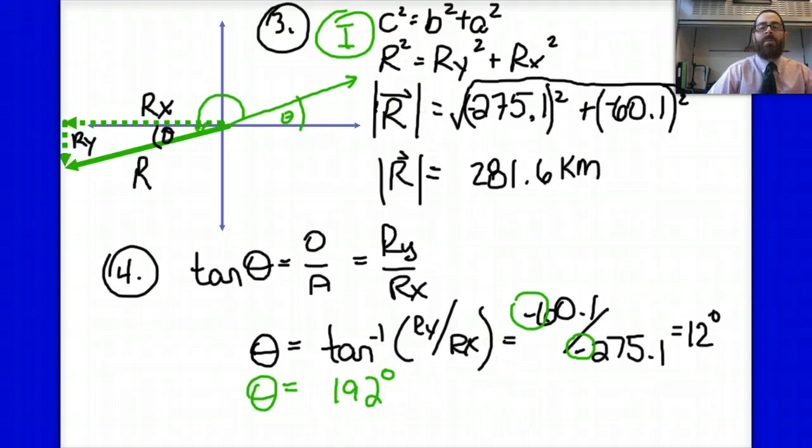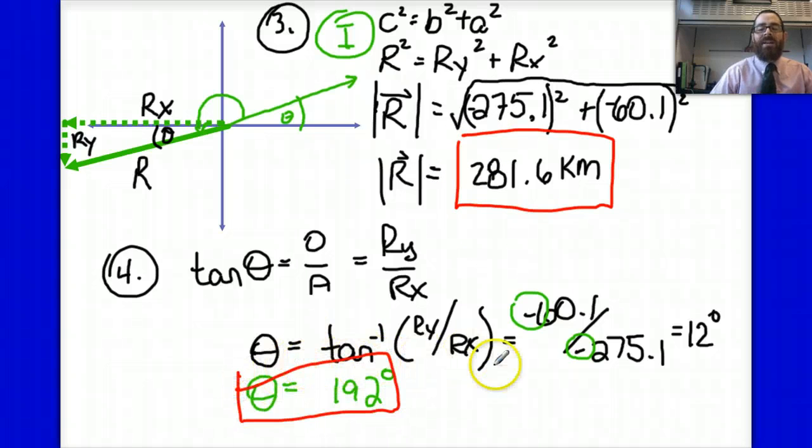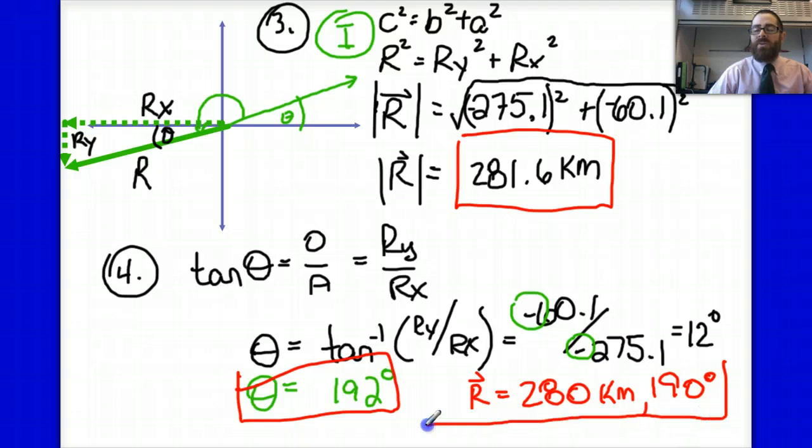Our final answer, basically answering the question of both magnitude and direction. Here's our magnitude, 281.6 kilometers, and our direction being 192 degrees. So I would write that as my final answer being 280 kilometers, 190 degrees dealing with significance.